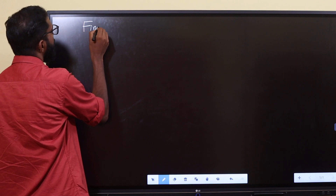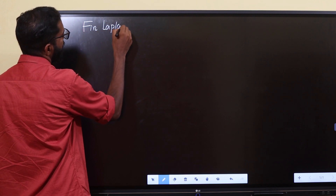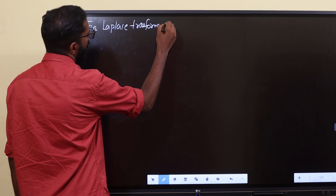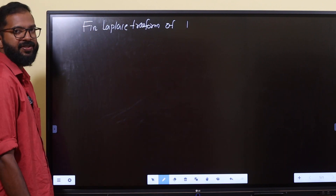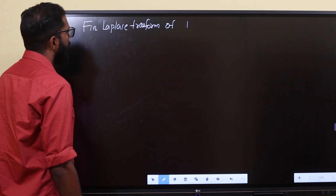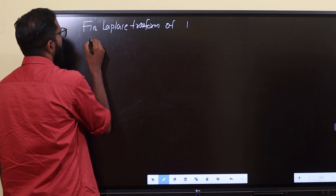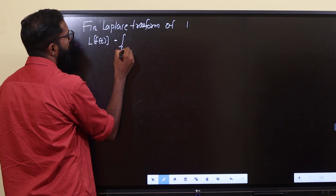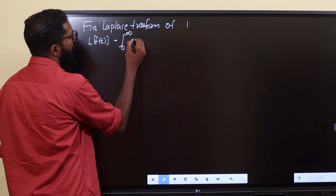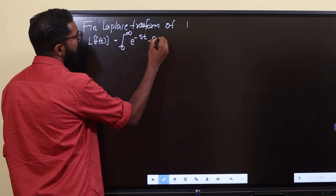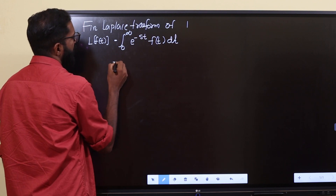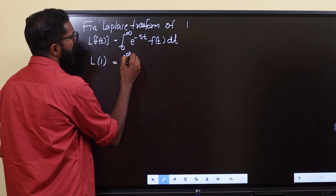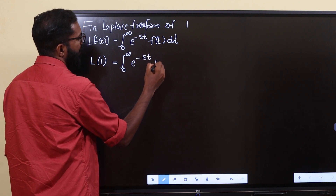Let's find the Laplace Transform of 1. Laplace of f of t is equal to integral 0 to infinity e raised to minus st f of t dt. That is equal to Laplace of 1, which is integral 0 to infinity e raised to minus st times 1 dt.